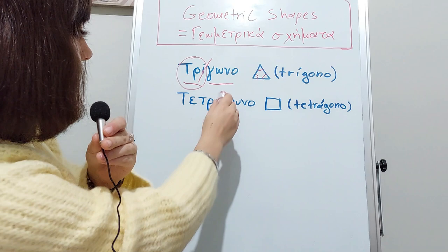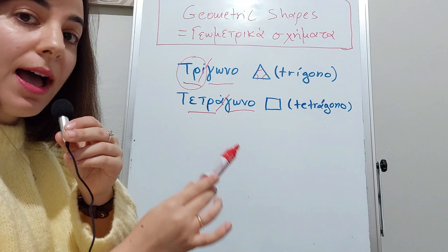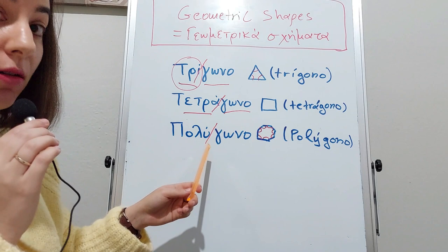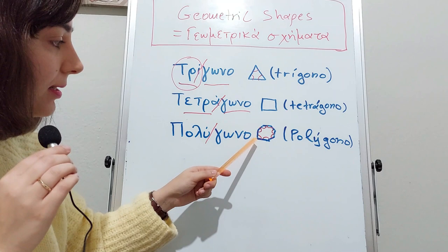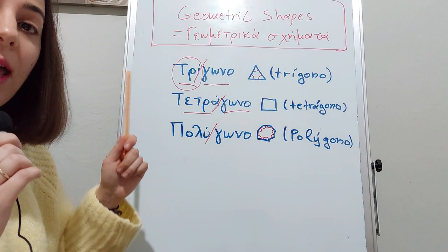Τετρα- denotes the number four, -γωνο means angles. Τετράγωνο - four angles. This is πολύγωνο, the polygon that has many angles. Πολύ means many. There is a certain number of angles that form the next shapes.